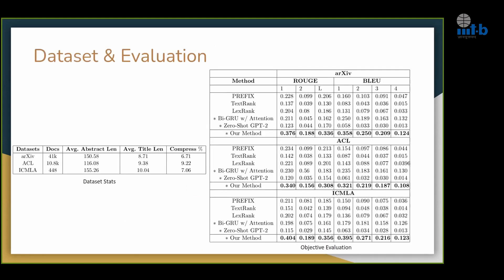For dataset and evaluation: the generation module is trained on a 70% training split from arXiv documents and tested on the arXiv test set as well as two different datasets from ACL and ICMLA. Evaluation uses classical methods along with attention-based bidirectional GRU, zero-shot GPT-2, and our method, evaluated on ROUGE and BLEU metrics — which measure n-gram overlap in terms of recall and precision.